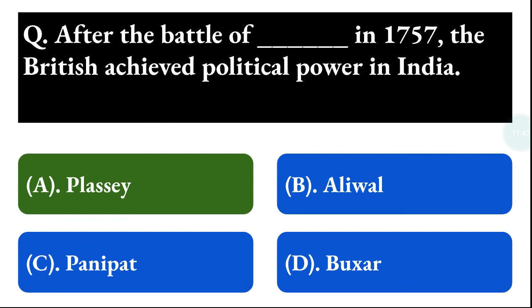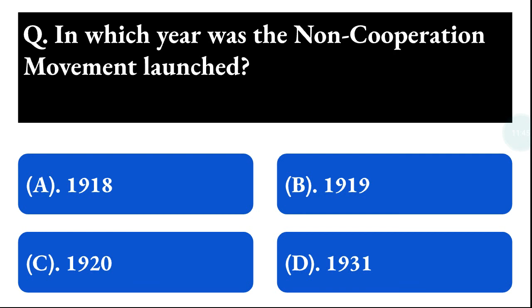Next question: in which year was the Non-Cooperation Movement launched? Option A: 1918, option B: 1919, option C: 1920, option D: 1931. The correct answer is option C, that is 1920.